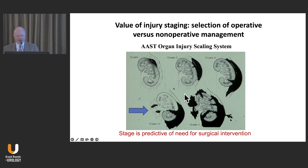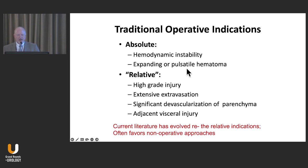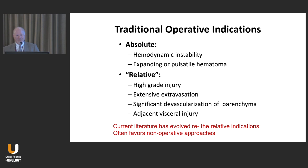Operative indications are largely restricted to these higher grade injuries. In the older literature, absolute indications for exploration would be hemodynamic instability and an expanding or pulsatile hematoma — that's what you'll see from the literature from the 1960s, 70s, and 80s. I've always had a hard time with this pulsatile hematoma concept. I'm not really sure what it's supposed to look like.